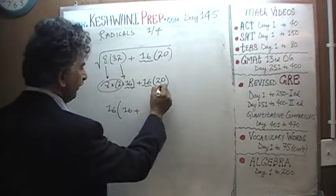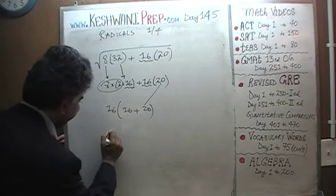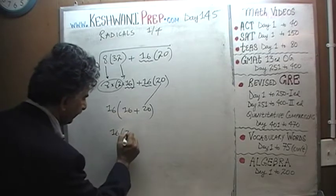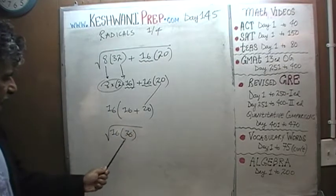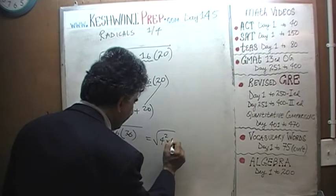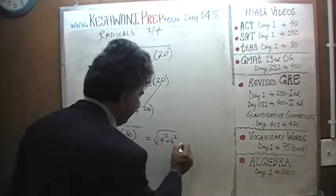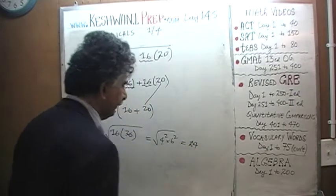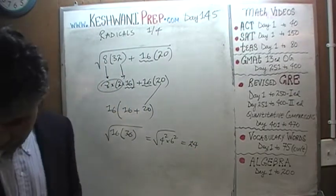Taking out 16 as a common factor, from the first term we are left with 8 times 2, which is 16, and from the second term we are left with 20. So we have 16 times (16 + 20) = 16 times 36. The square root of 16 times 36 is 4 squared times 6 squared, which is simply 4 times 6 = 24. The final answer is 24.